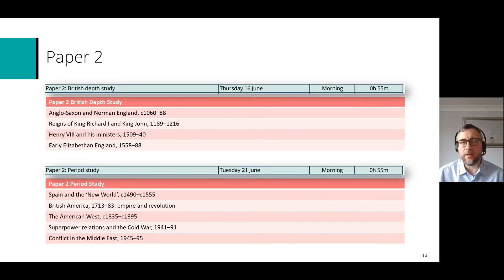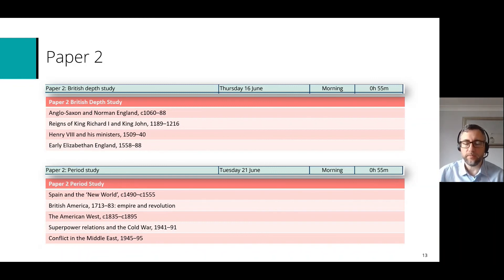To be clear, I've listed the topics that come under each paper. The paper 2 British Depth Study covers depth topics such as Anglo-Saxon Norman England, Richard and John, Henry VIII, and Early Elizabethan England. The paper 2 Period Study covers broader topics such as American West, Cold War, conflict in the Middle East, British America, and Spain and the New World.